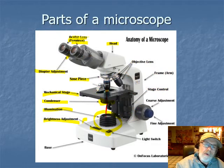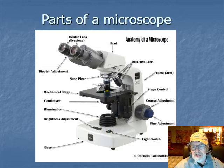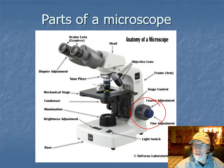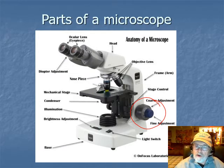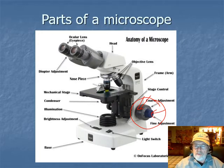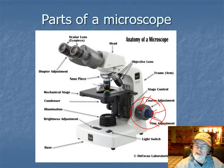Probably the most important thing: the adjustment knobs. On the side of the microscope there are two knobs - a larger knob which is the coarse adjustment, and a smaller knob which is the fine adjustment. You use the coarse adjustment knob to get close to focus first. Then once you have rough focus, you fine-tune it with the fine adjustment - just a little bit to make the image sharper.